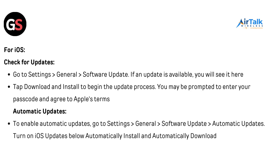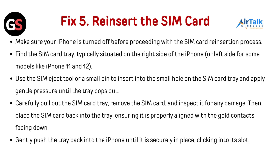Fix 5: Reinsert the SIM card. Make sure your iPhone is turned off before proceeding. Find the SIM card tray, typically situated on the right side of the iPhone, or the left side for some models like the iPhone 11 and 12. Use the SIM eject tool or a small pin to insert into the small hole on the SIM card tray and apply gentle pressure until the tray pops out. Carefully pull out the tray, remove the SIM card and inspect it for any damage. Place the SIM card back into the tray, ensuring it is properly aligned with the gold contacts facing down. Gently push the tray back into the iPhone until it clicks securely into place.